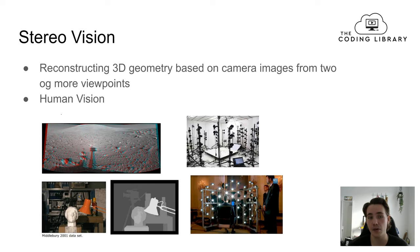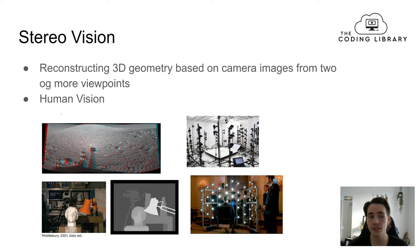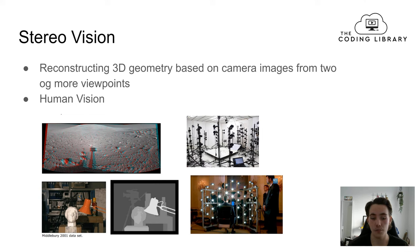Let's get an overview of what stereo vision is. When using stereo vision we're reconstructing the 3D geometry based on camera images from two or more viewpoints. We can compare this to human vision, where we have two eyes looking in front of us. If we close one eye, we have a more difficult time estimating the depth of objects or the distances to them. Stereo vision is like human vision where two cameras see the same things, and we use the two individual viewpoints to estimate depth or distances.